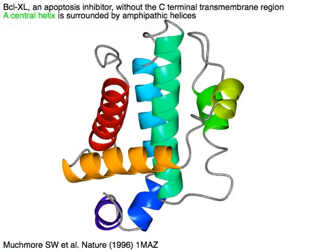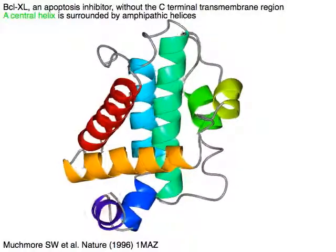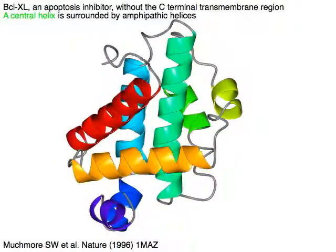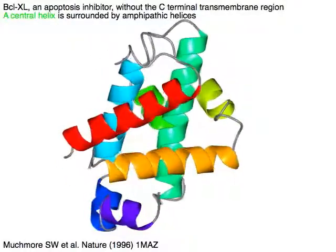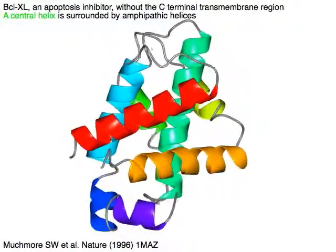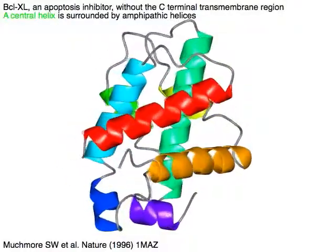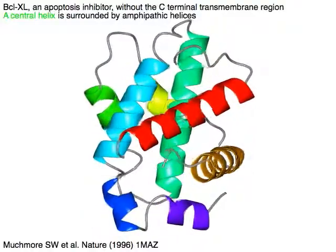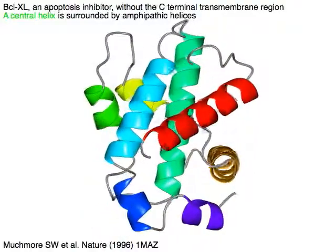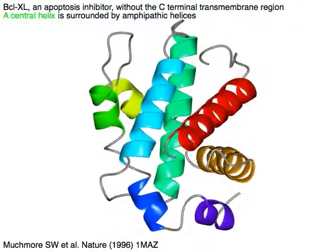BCL-XL, an apoptosis inhibitor structure, is shown without the C-terminal transmembrane region. A central helix in green is surrounded by amphipathic helices.